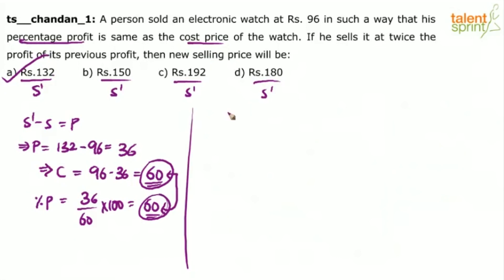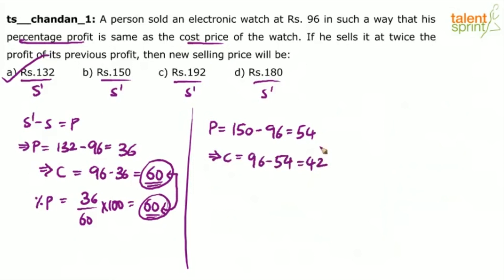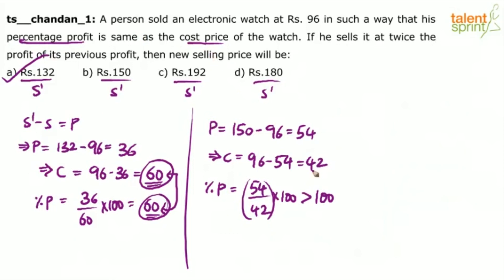For option two: profit = 150 minus 96 = 54 rupees. Cost price = 96 minus 54 = 42. Profit percentage = 54 by 42 into 100, which is greater than 100. But the cost price is only 42, so percentage profit does not equal cost price. Option B is the wrong answer. Similarly, options C and D will also be wrong.